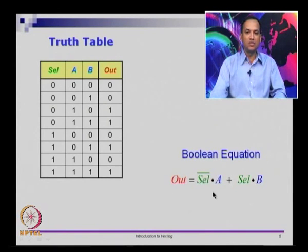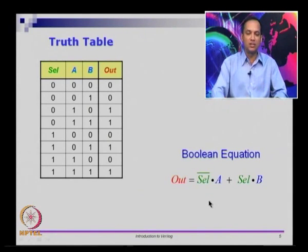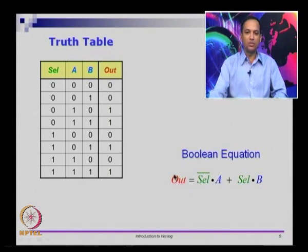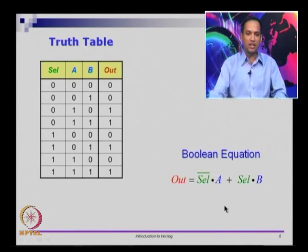If select is 0, you can write it as select bar. If I ask you: if x is 0, then you can check x bar — if x bar is 1, then x is 0. It is the same thing here: if select is 0, pass on a; if select is 1, pass on b. This is the Boolean equation for the same design problem.